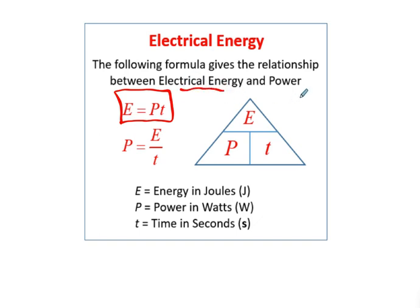This is important stuff to calculate. Before, we had power — defined earlier as the energy rate, so energy used per time. Here's our fancy triangle for manipulating formulas. Energy is always measured in joules, power in watts, and time in seconds.